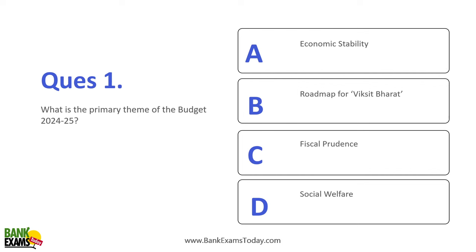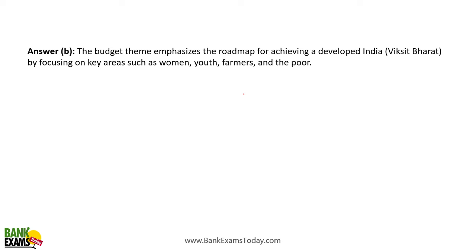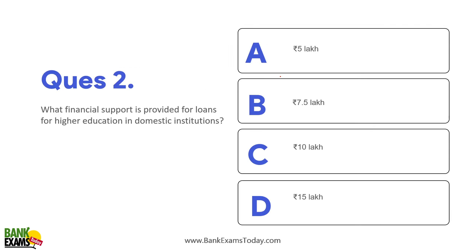What is the primary theme of Budget 2024-25? It is 'Roadmap to Viksit Bharat' — very important question. The primary theme of the Union Budget 2024-25 is 'Roadmap to Viksit Bharat,' focusing on four key areas: women, youth, farmers, and the poor.